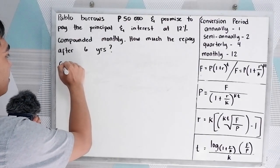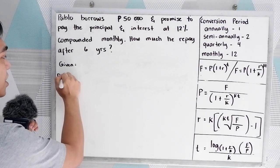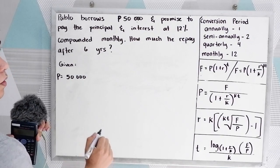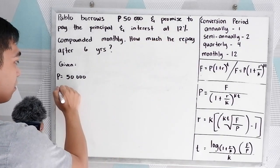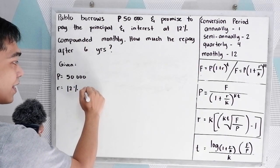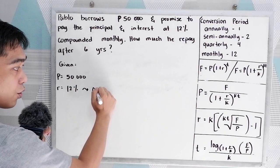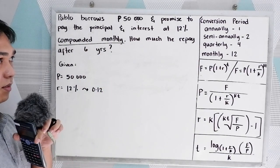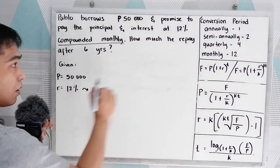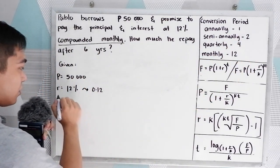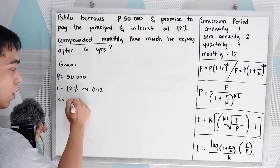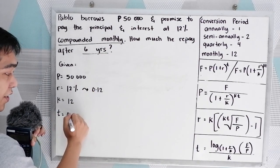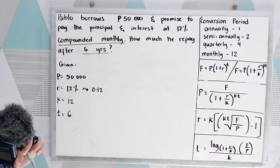So, our given: we have the principal, which is 50,000 pesos. We have the rate of 12%; in decimal, that is 0.12. We have compounded monthly. In our conversion period, monthly is equal to 12. So K is equal to 12. And we have a time of six years.